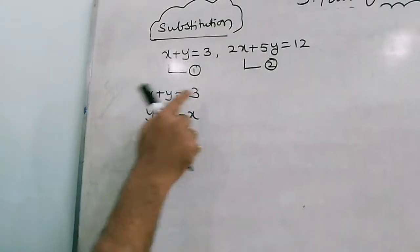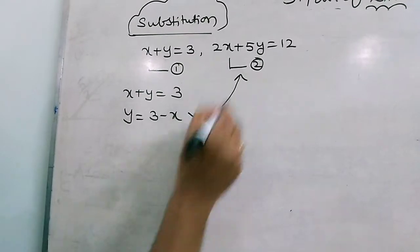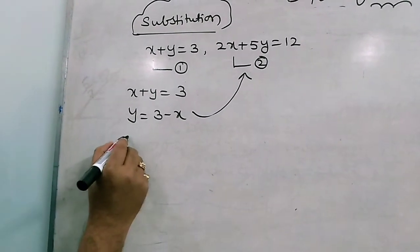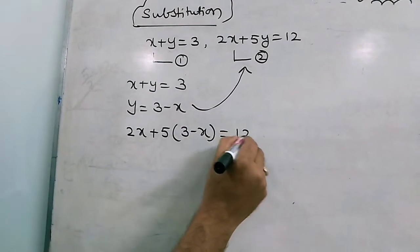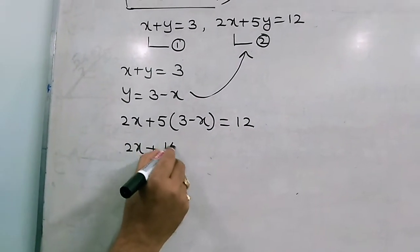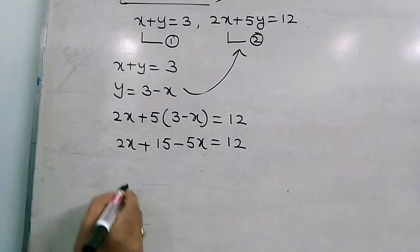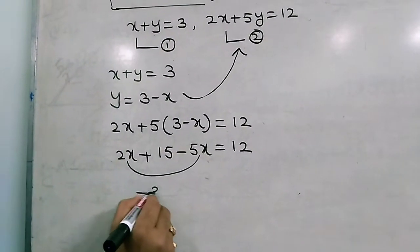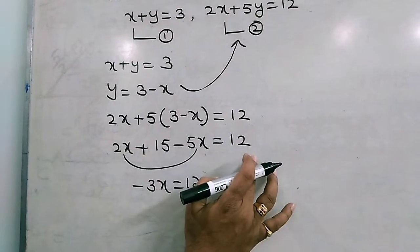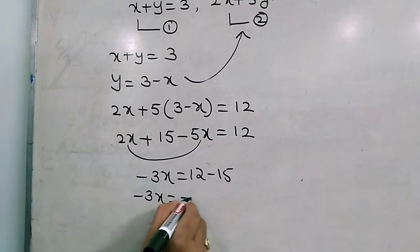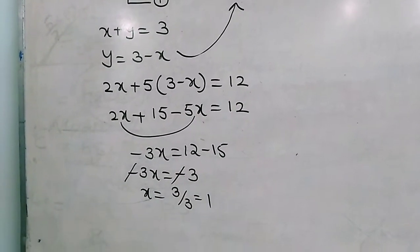Now, y equals to 3 minus x — substitute this in equation 2. So in 2x plus 5y equals to 12, we get 2x plus 5 times (3 minus x) equals to 12, which gives 2x plus 15 minus 5x equals to 12. Then 2x minus 5x equals to minus 3x, and transposing 15 to the right-hand side: minus 3x equals to minus 3. Both negatives cancel, giving x equals to 3 divided by 3, which equals to 1.